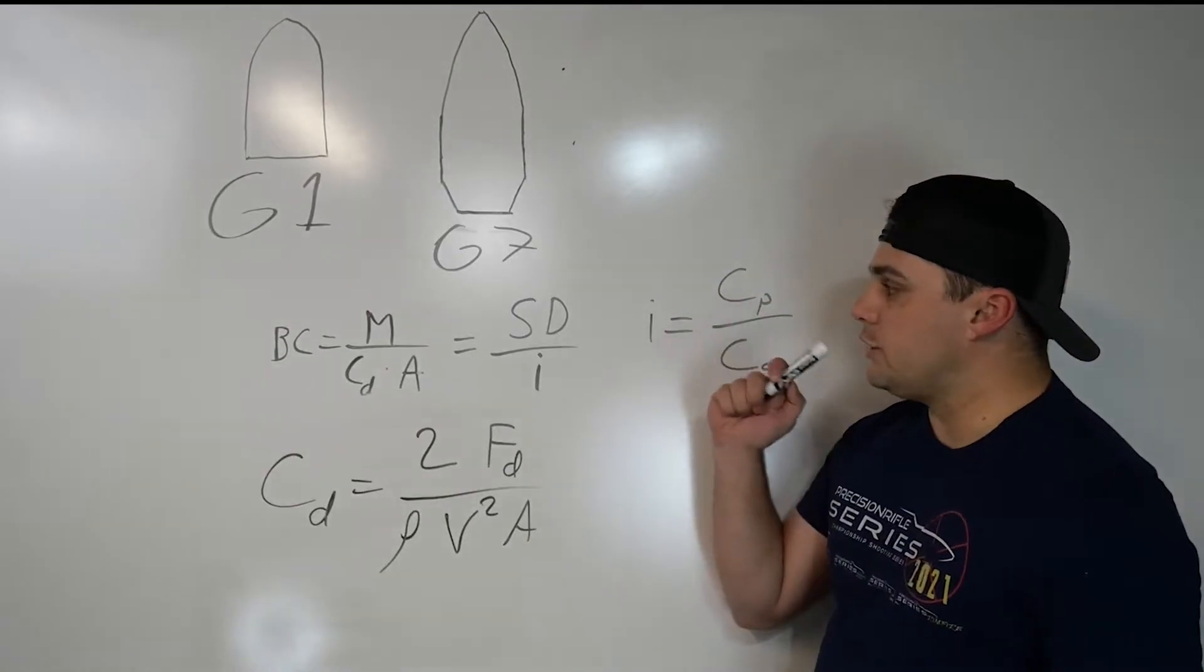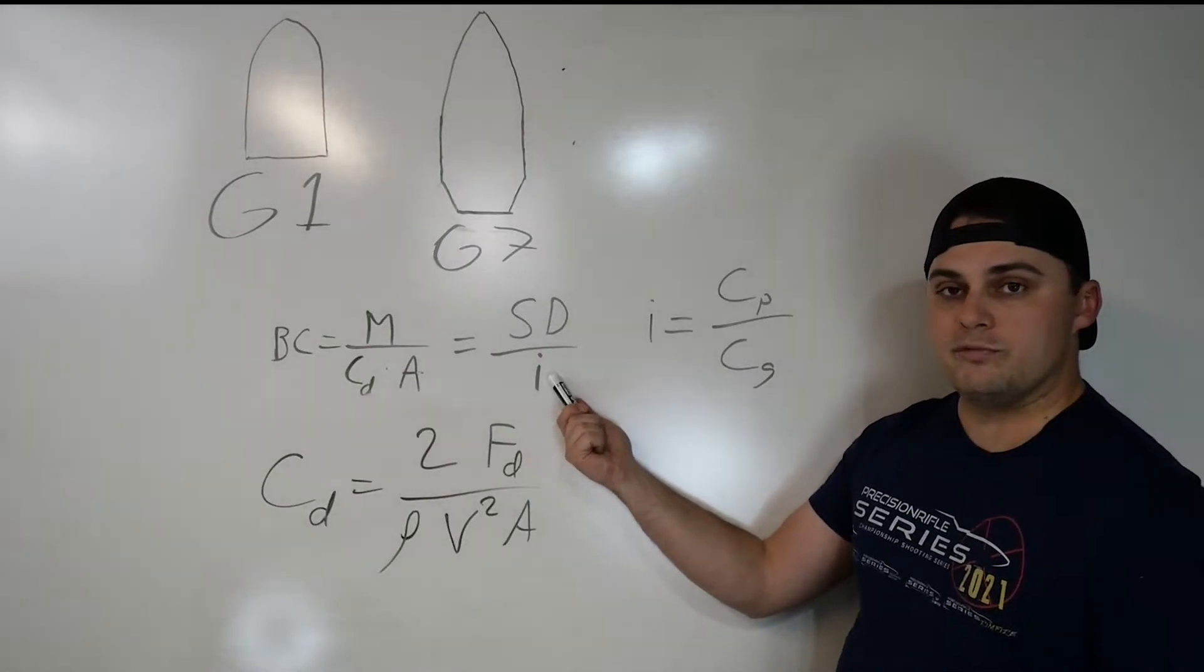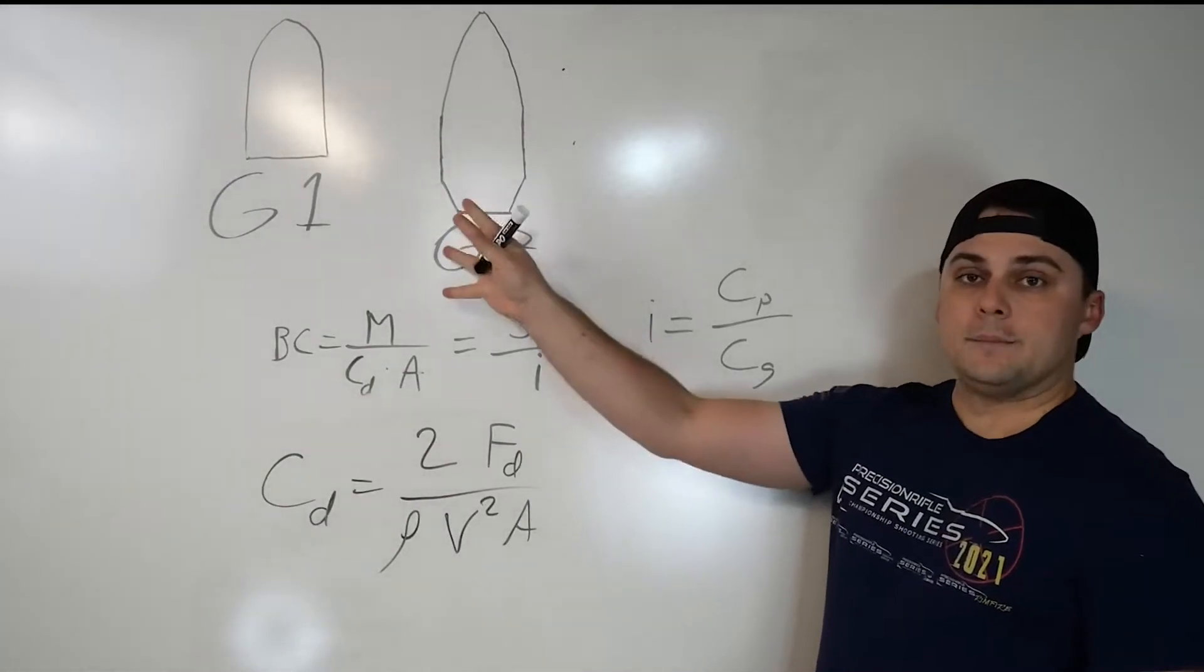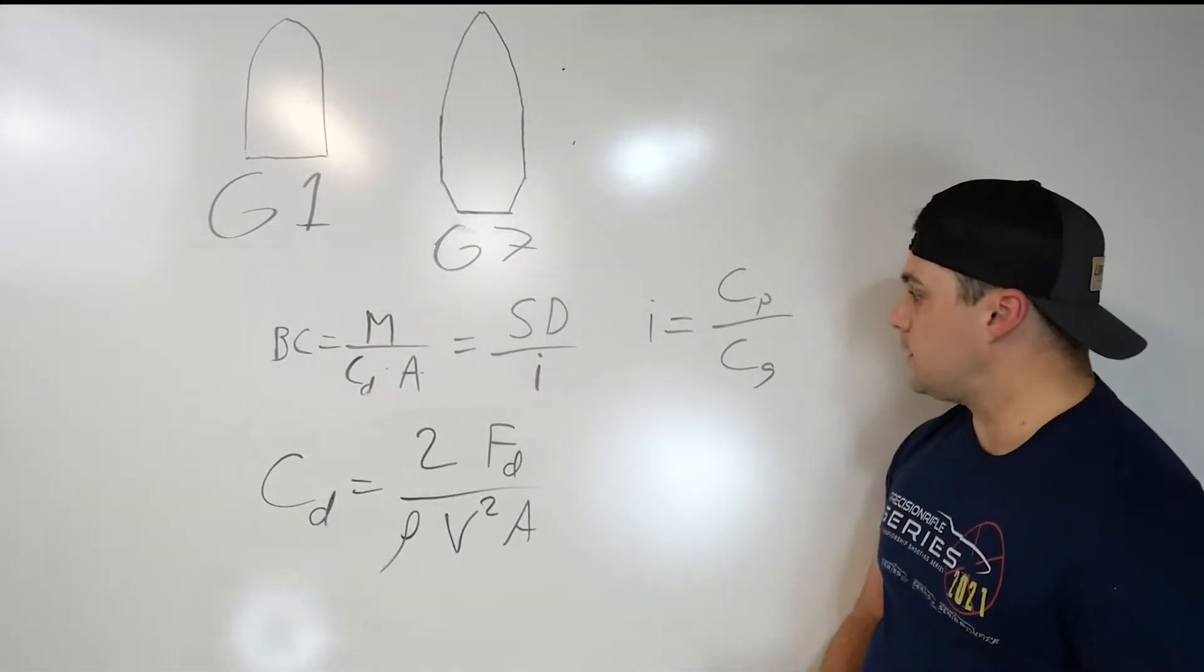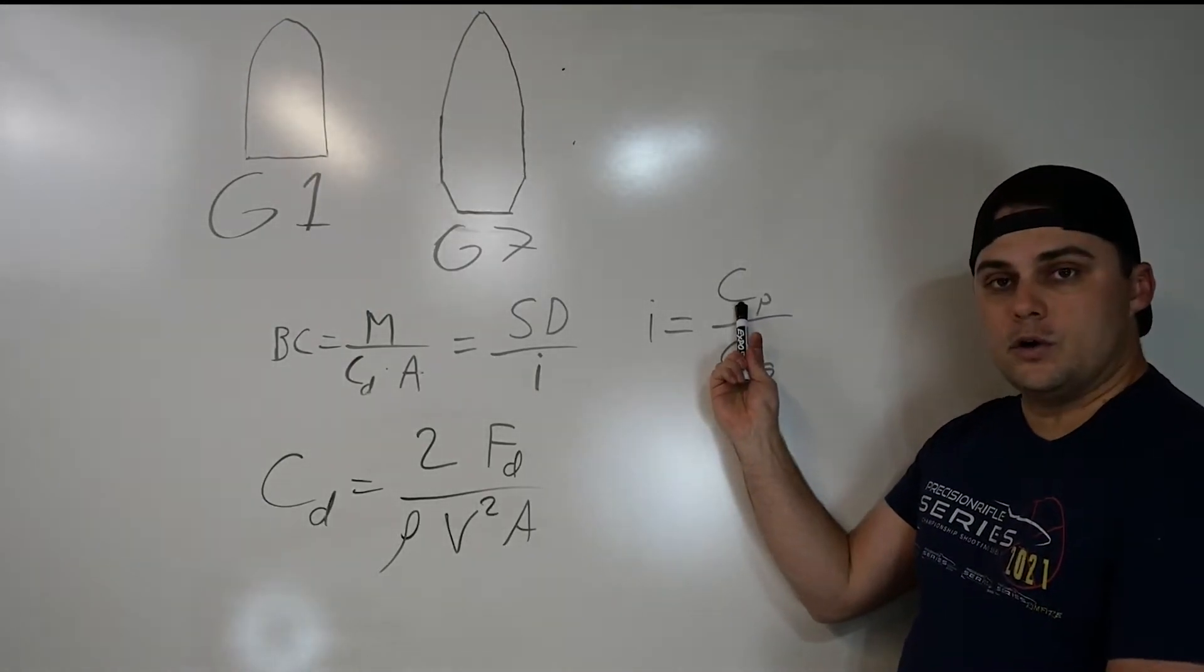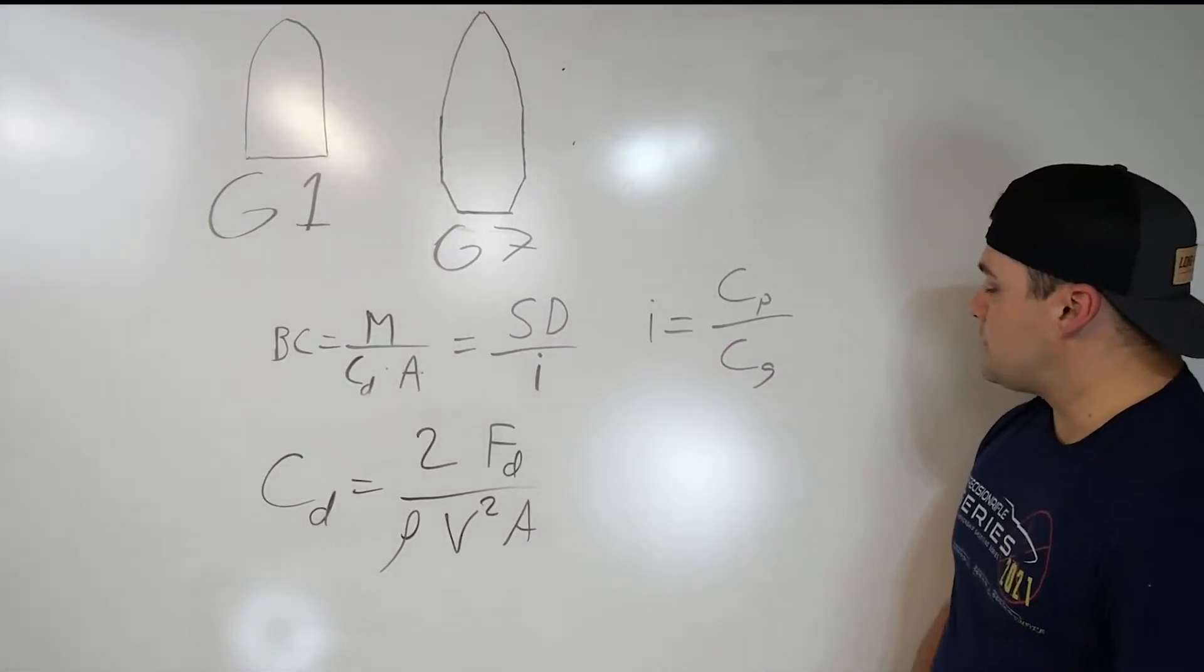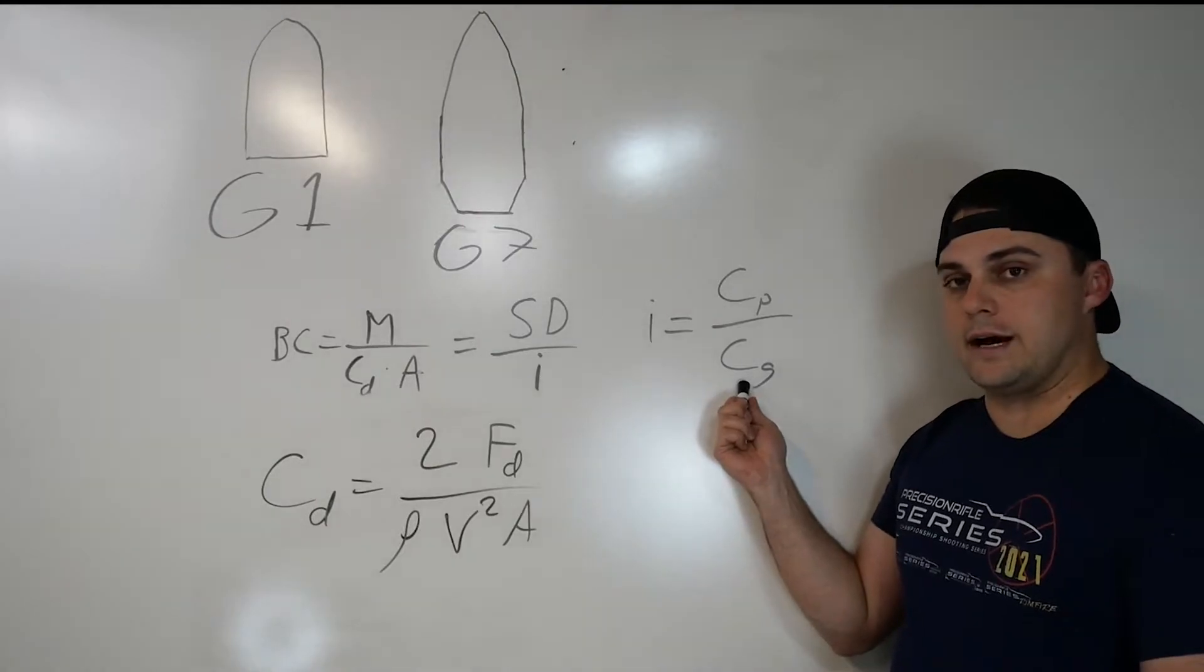The typical one used in the industry is your sectional density of the projectile divided by what is known as a form factor. So this is kind of where we get back up into the standard projectile. The form factor, what that ends up being is the drag coefficient of a projectile that you're wanting to use versus the drag coefficient of the standard projectile.